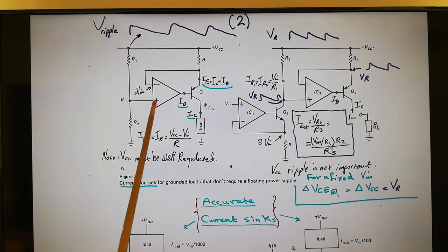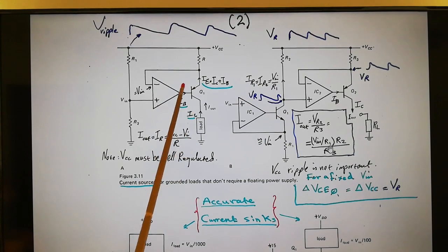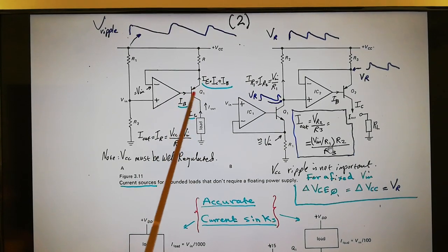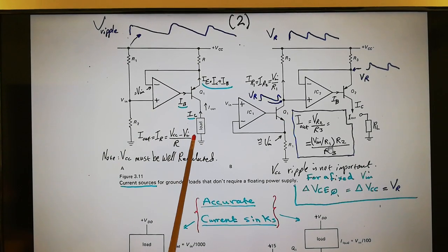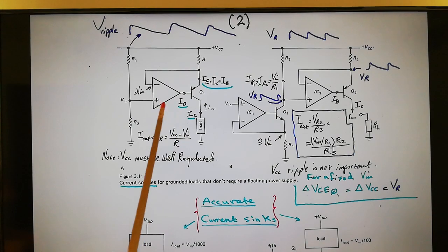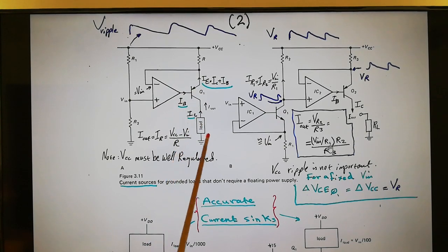The current across the load is not 100% accurate to the current across R because of the missing IB. If you want to use a circuit like this, you must use a transistor with a high HFE or high beta — something like 200, 300, or 400 — so you'll only be missing about one percent or a fraction of one percent of current.